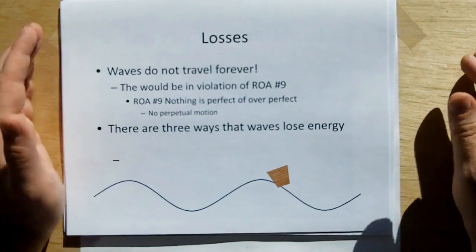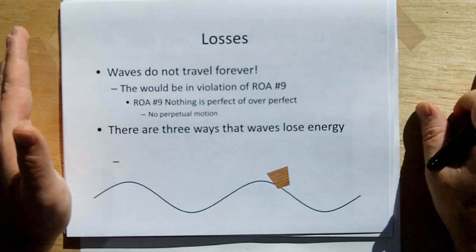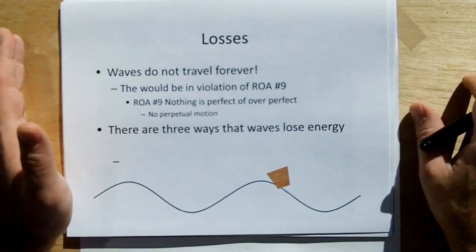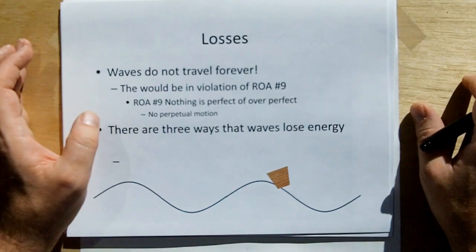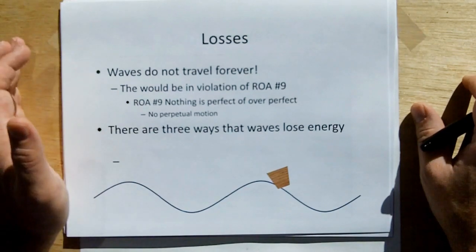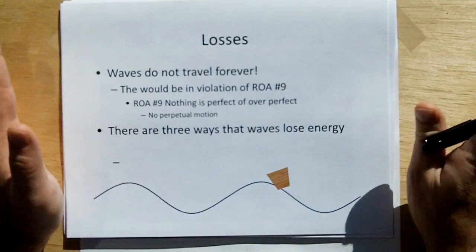Waves have losses. Waves do not travel forever. Otherwise, that would be in violation of rule of acquisition number nine, which is nothing is perfect or over perfect, meaning there's no perpetual motion or over unity. And there are three ways that waves lose energy.